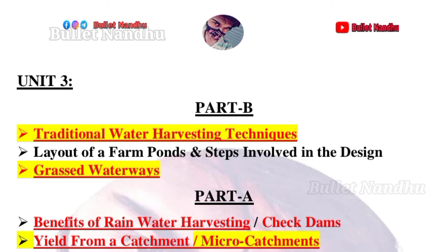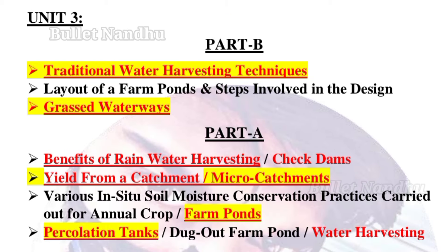Part B: Traditional water harvesting techniques. Water harvesting concepts, grass waterways, and farm ponds — Part A. Benefits of rainwater harvesting, check dams — better life. Micro catchments — first important. Catchment concepts. Farm pond. Percolation tanks — better life.